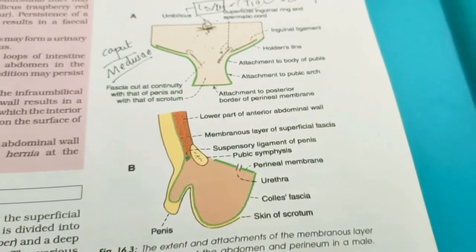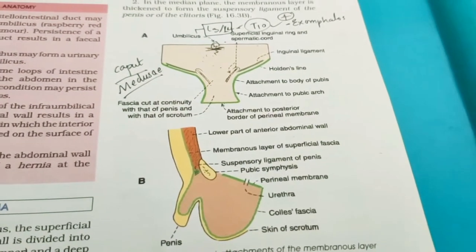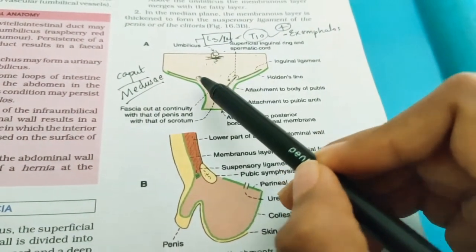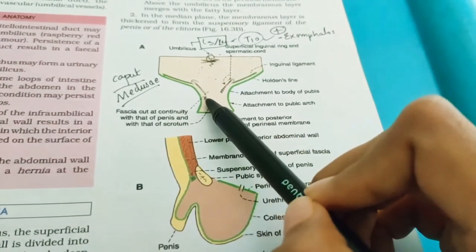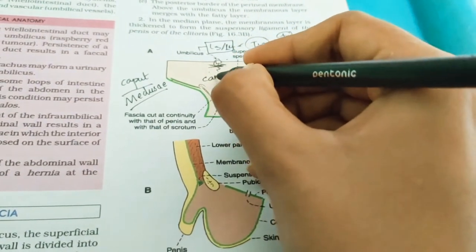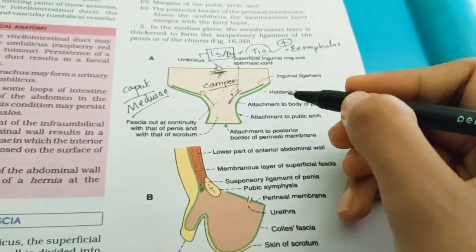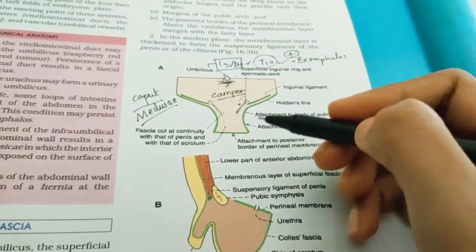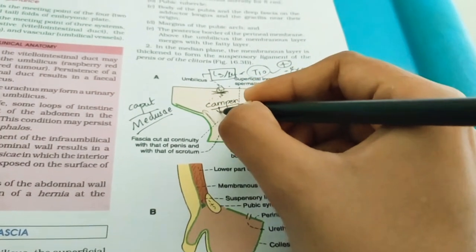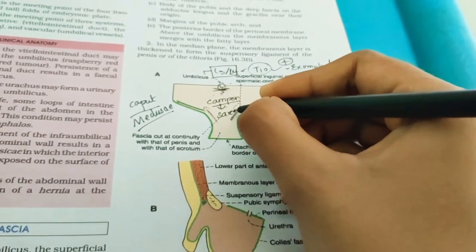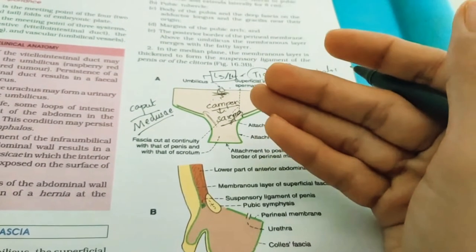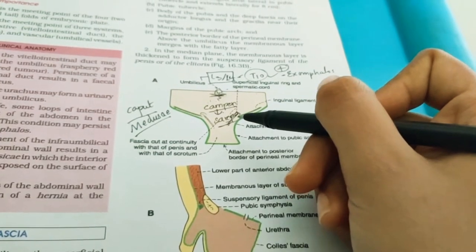We are going to start the superficial fascia of the anterior abdominal wall. Below the level of the umbilicus, the superficial fascia is divided into a superficial fatty layer, also called the fascia of Camper, and a deep membranous layer called the fascia of Scarpa. Camper is the outer superficial layer; deep to it you have Scarpa.